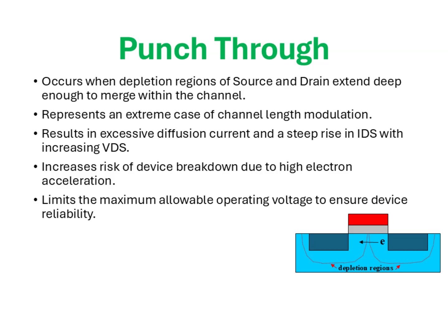From an electrical perspective, this condition results in a very steep rise in the drain current IDS with increasing VDS, far beyond the expected saturation behavior. In other words, the device loses its ability to maintain current saturation, and current continues to increase almost uncontrollably. The danger lies in the fact that the rapid increase in current is accompanied by strong electric fields, which accelerate electrons to very high energies — not only increasing hot carrier effects but also risking permanent damage through oxide degradation or even physical breakdown. Therefore, punch-through inherently limits the maximum operating voltage of scaled MOSFETs.